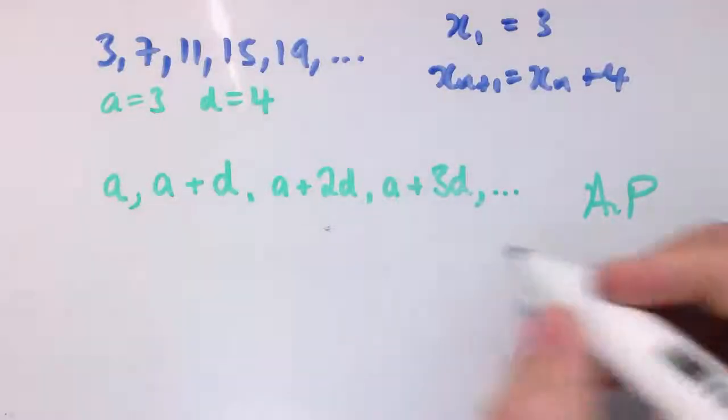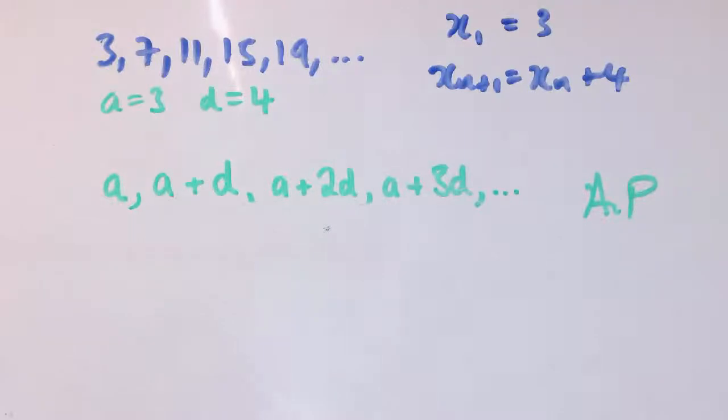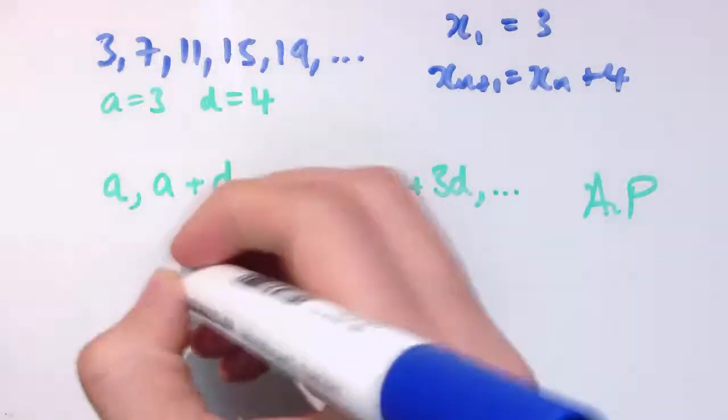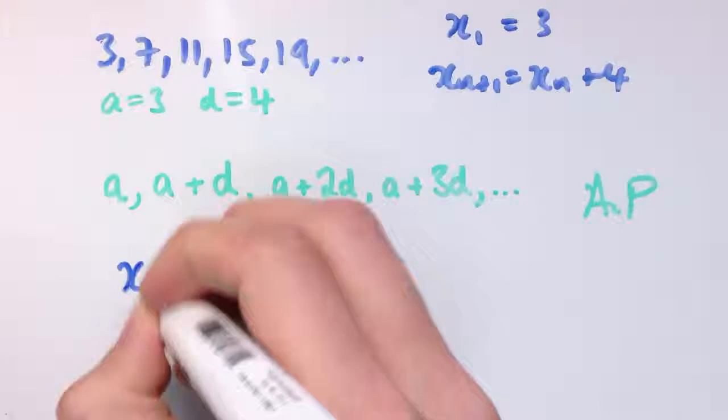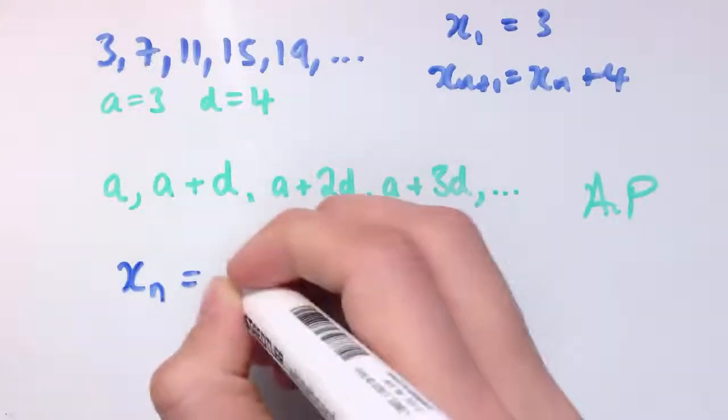To get a general form for the nth term definition, at the end of the previous video we did an example with fractions and suggested a slightly different way of writing down the formula. That's what we'll do here for the general term. I'm going to say that xₙ is—I'm going to start with the first term a.